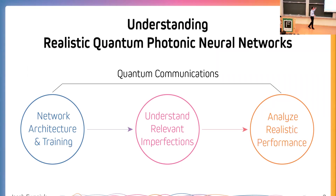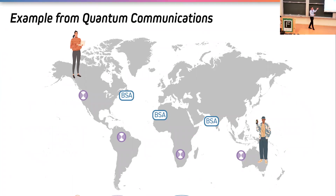Keeping all of this in mind, this is the roadmap for my talk today for understanding realistic quantum photonic neural networks. I'm going to draw from an example in quantum communications, keeping in mind that in principle if these networks are realistic for one application they have the potential to do a lot more. I'm going to start by looking at the network architecture and how they are trained, then add some relevant imperfections and ultimately analyze the realistic performance.